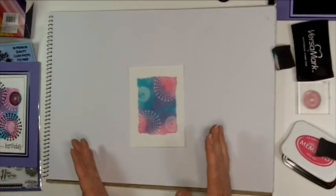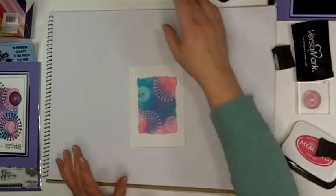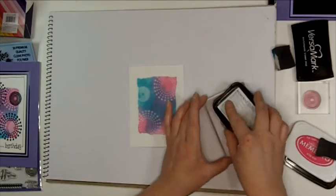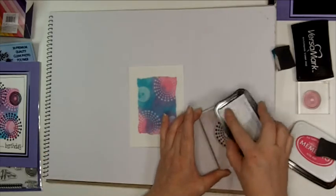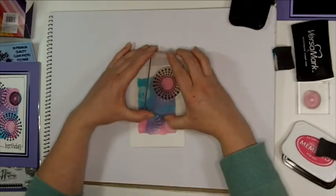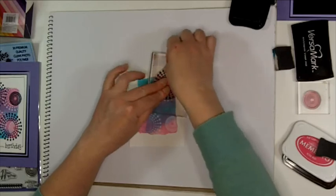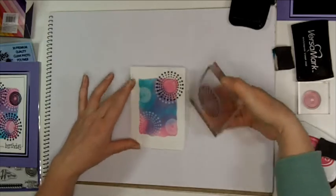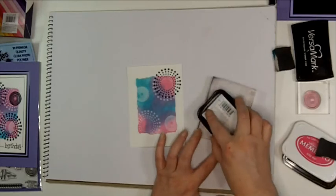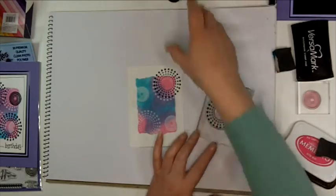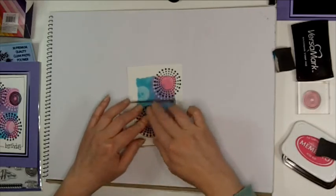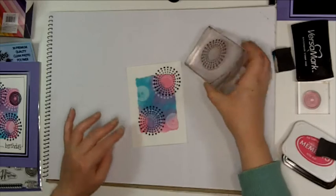You can either leave it like that or you can do what I did on the original card, which is to overstamp it with black. It just gives you another sort of layer. So we'll try and offset it slightly so that we don't obscure our original design.